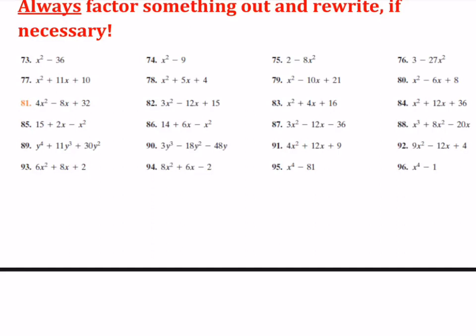Let's go ahead and start with number 73 through 76 here. These are all different binomials. How do I know they're binomials? Two terms. So if I were to solve, for example, number 75.